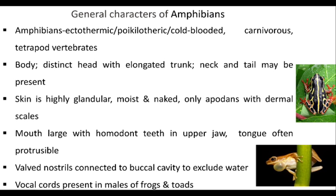To compensate for their thin and delicate skin, amphibians have evolved mucus glands principally on their heads, backs, and tails. In addition, most species have glandular mucous glands that secrete poisonous substances acting as a defensive mechanism. The main poison-producing glands, called the parotid glands, produce the neurotoxin bufotoxin and are located behind the ears of toads. These poisonous glands act as a defensive mechanism in their body.